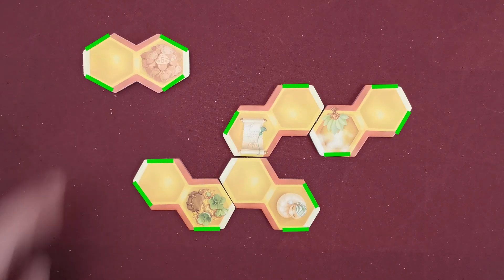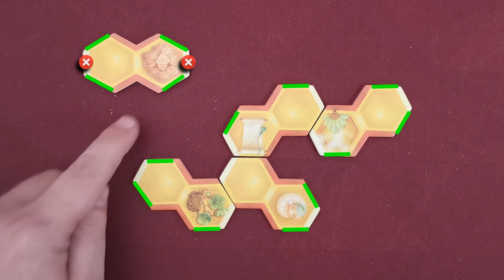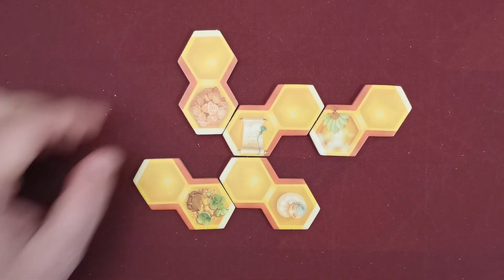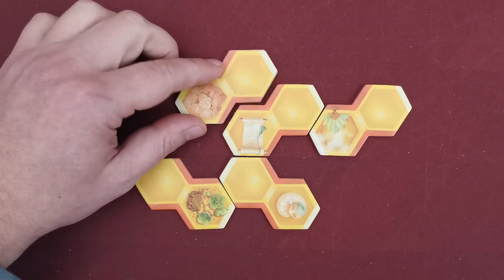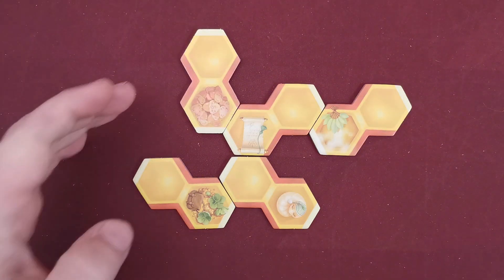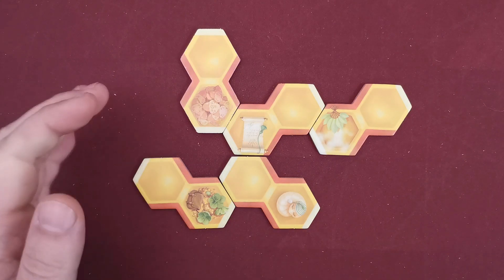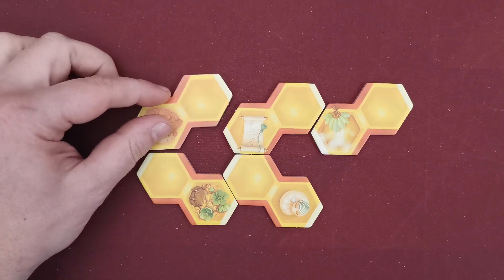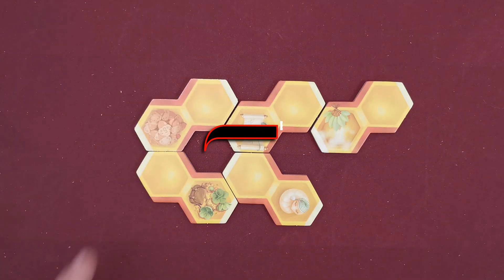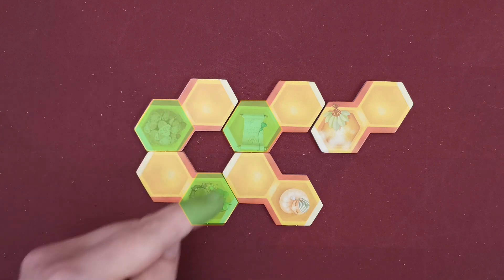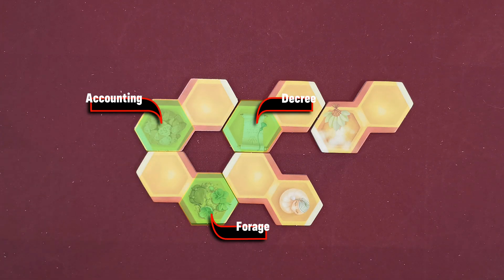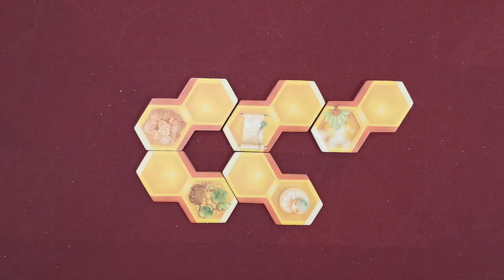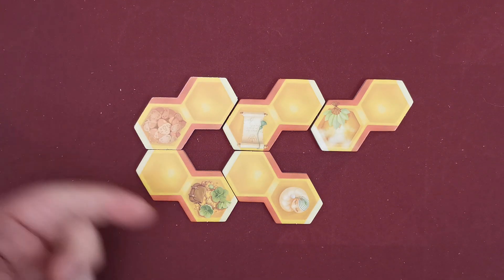After the player takes the tile they must place it into their hive. Hive tiles are connected using their yellow sides — not the white and not the red. After the player places the new tile in a valid position, that player's turn is over. However, if placement of the new tile has created an empty hexagon, then the player activates all action icons that are adjacent to the empty hex. It is possible that with one placement you create multiple empty hexes.